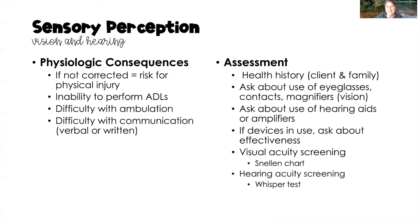If a client is using a corrective device, ask about its effectiveness — does wearing glasses improve vision, or do hearing aids make hearing better? For visual acuity screening, we often use the Snellen chart, but we can also use the Rosenbaum chart. For hearing acuity, we often use the whisper test, and we may also use the Weber or Rinne test. The Weber and Rinne tests help distinguish between conductive hearing loss and sensorineural hearing loss.